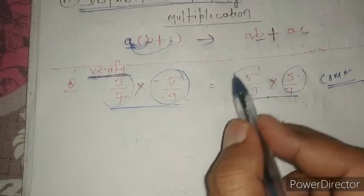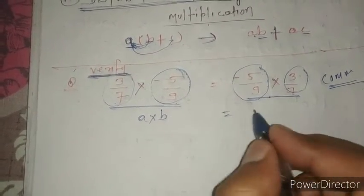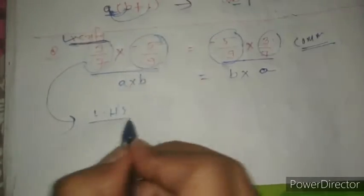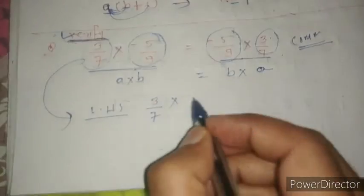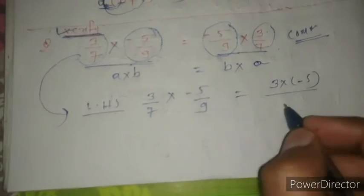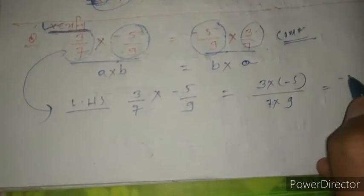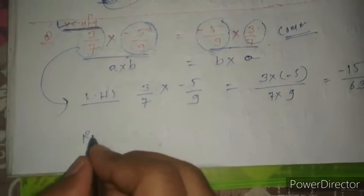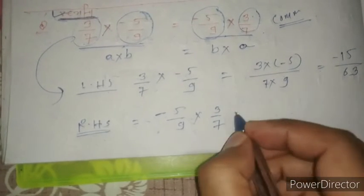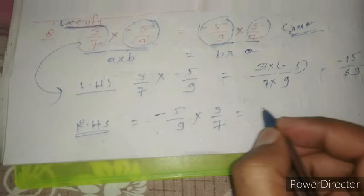We need to verify this, so we will solve it. Let me take this as LHS and this as RHS. In LHS, we have 3 upon 7 into minus 5 upon 9. When we solve this, 3 into minus 5 gives minus 15, and 7 into 9 gives 63, which is minus 15 upon 63. Now on the RHS, we have minus 5 upon 9 into 3 upon 7. Similarly, minus 5 into 3 is minus 15, and 9 into 7 is 63, which gives minus 15 upon 63. So our LHS equals RHS, which is verified.